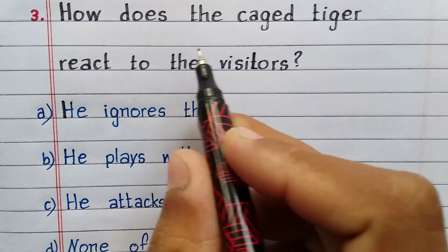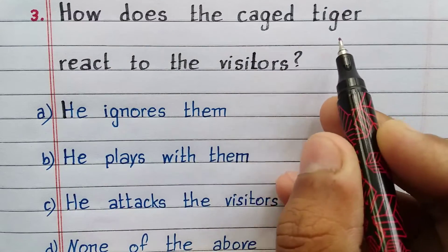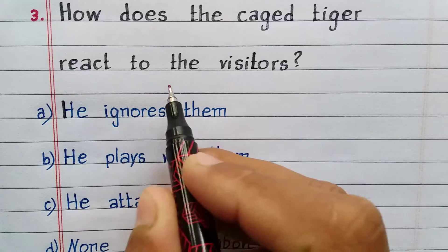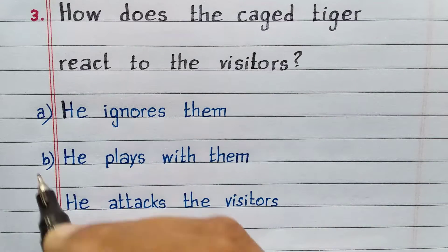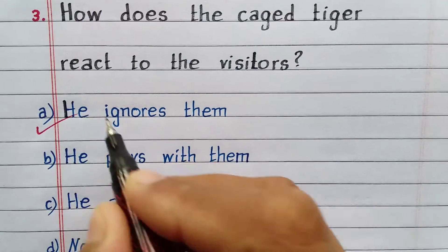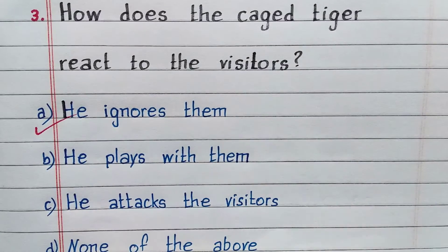How does the caged tiger react to the visitors? Option A. He ignores them.